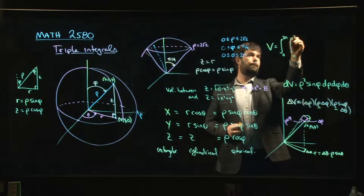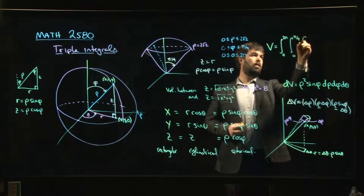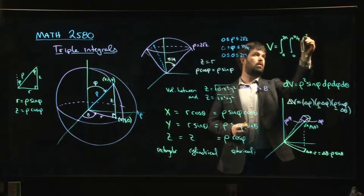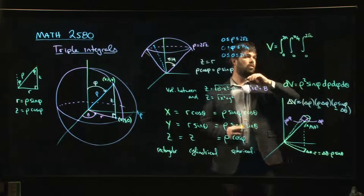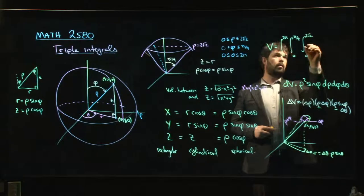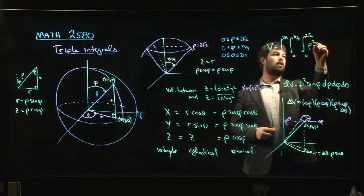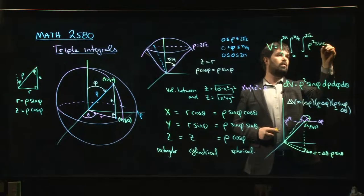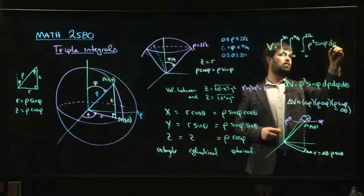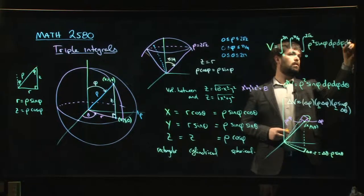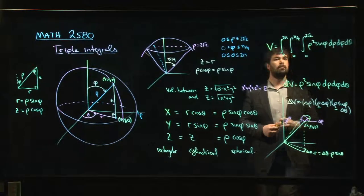integral from 0 to pi over 4, the integral from 0 to 2 root 2 of the volume element: rho squared sine phi d rho d phi d theta. Okay?